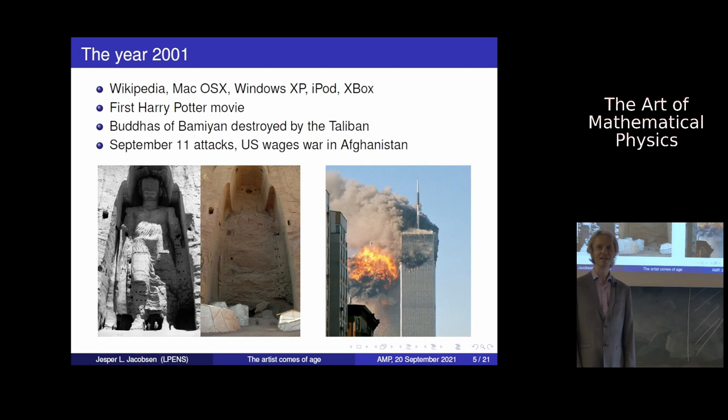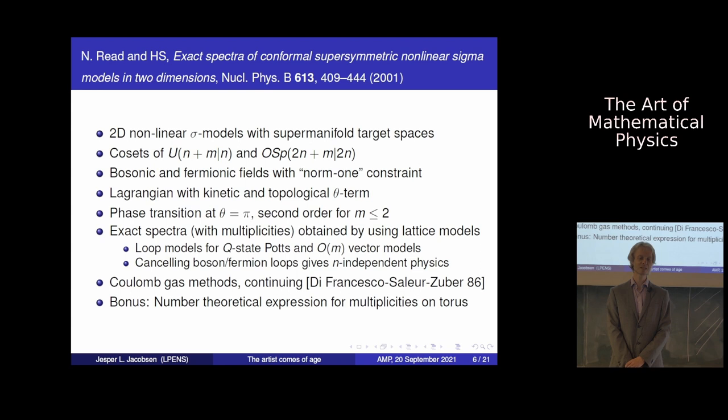Let's make a jump back in history. To get you in the right mood: 2001 was the year when Wikipedia was launched, Mac OS X started, Windows XP, iPod, Xbox, the first Harry Potter movie. Crazy guys destroyed the fantastic Bamiyan Buddhas in Afghanistan. And there was of course the September 11 attacks and the war in Afghanistan. Clearly these guys wanted to make a big impact, but Hubert also wanted to do something big with a much more constructive approach. He wrote a paper with Nick Reed called Exact Spectra of Conformal Supersymmetric Nonlinear Sigma Models in Two Dimensions.